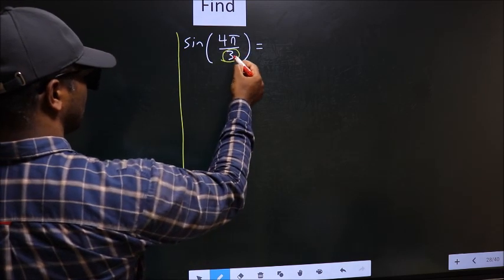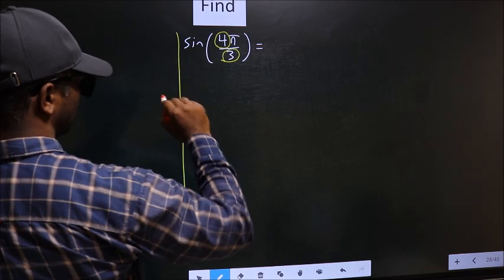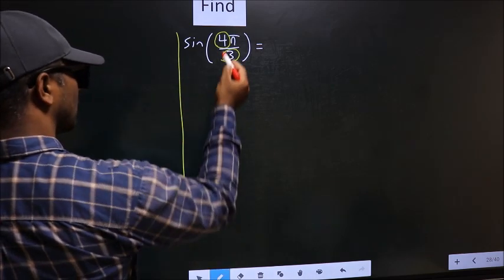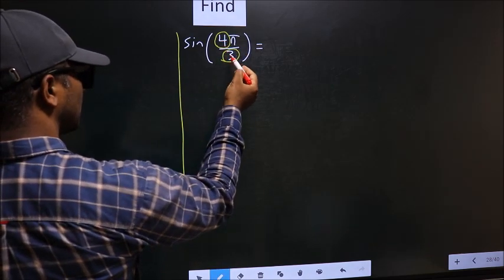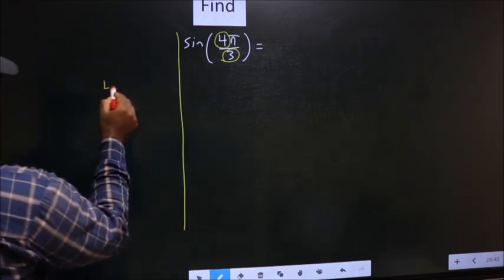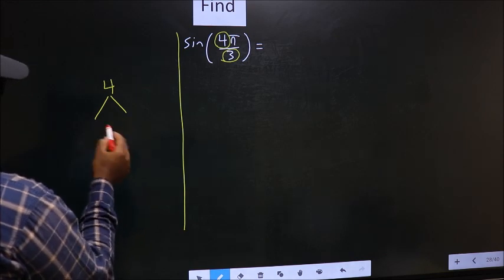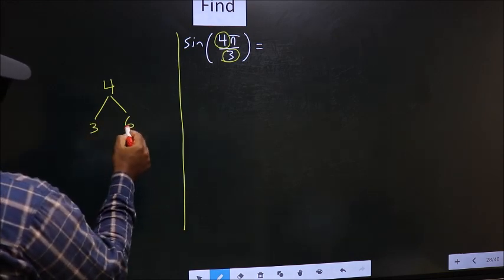In the denominator we have 3. In the numerator we have 4. Now you should look, 4 is close to which multiple of 3. What I mean is 4, and here you write multiples of 3.